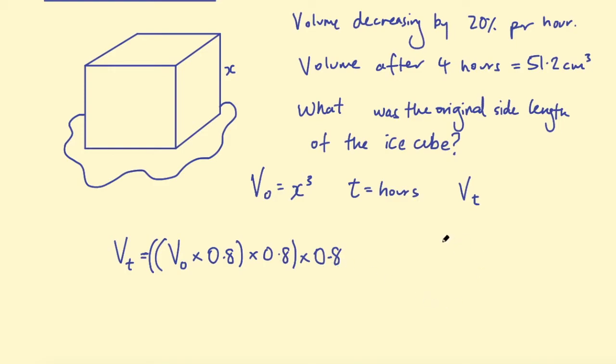Well, how would we write 2 times 2 times 2 times 2? What's an easier way to write that? Well, it's 2 to the power of 4. So we can write this formula. Instead of writing 0.8 t number of times, we can shorten this formula to 0.8 to the power of t, the number of hours.